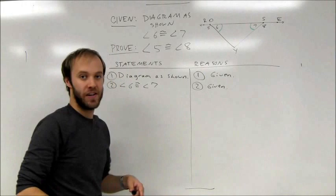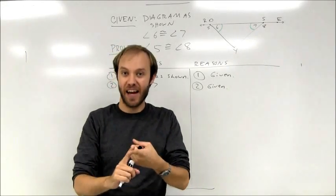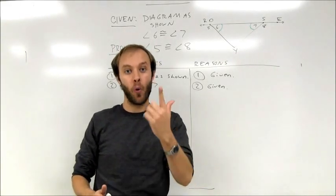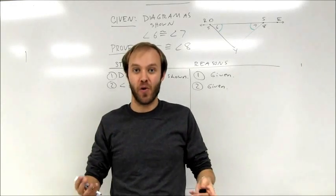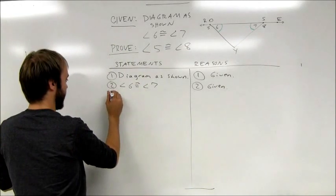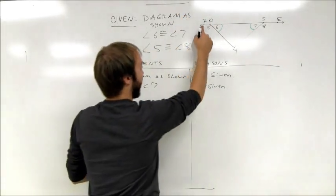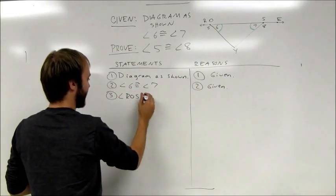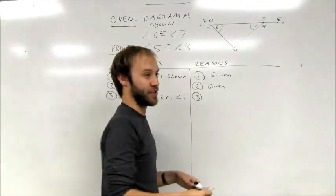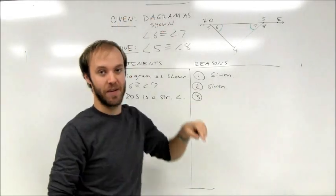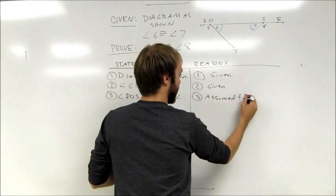At this point I'm going to use the idea of supplements of congruent angles. But to do that, I need to show that I have supplementary angles, which means those angles either add up to 180 degrees or form a straight angle. In this case, the angles form a straight angle, and those steps all have to be included in the proof. So step three: I'm going to look at the straight angle with the vertex at O, where angle 5 and 6 come together — that's angle ROS. So I'm going to say that angle ROS is a straight angle, and the only reason I know that is I'm assuming it from the diagram. That's one of the few things I am allowed to assume. The reason there is: assumed from diagram.